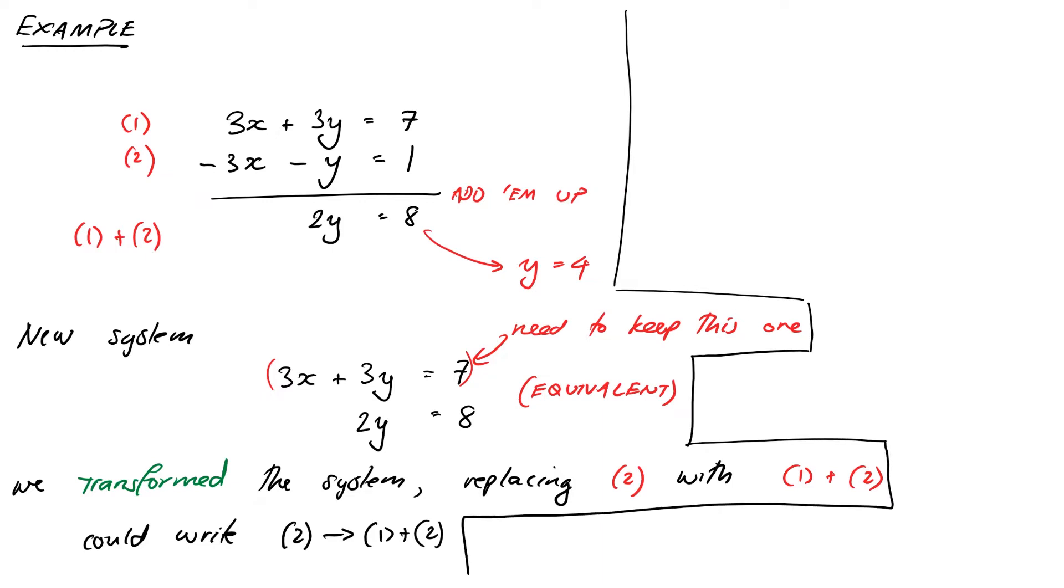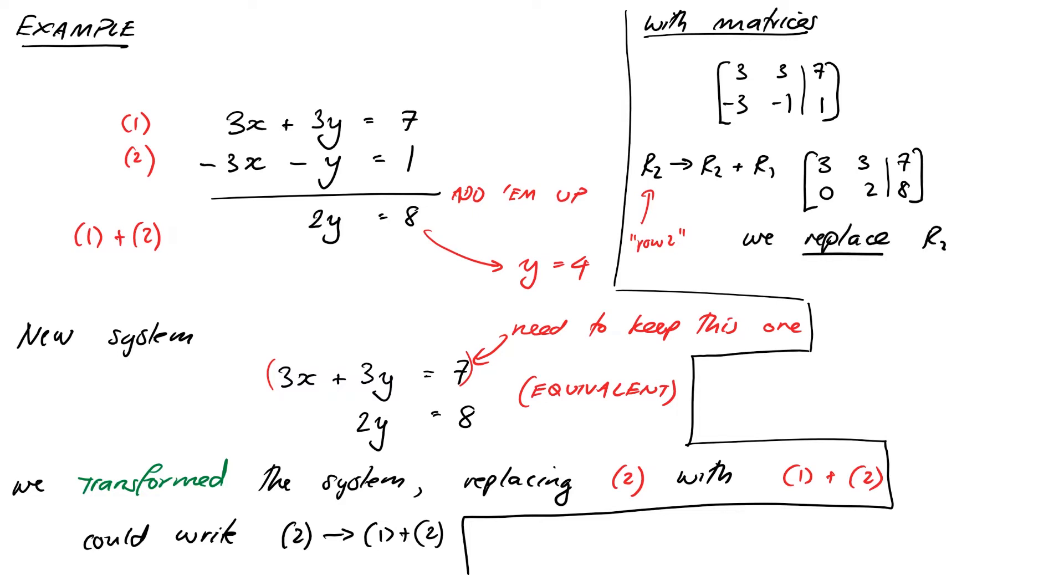Let's have a look at what this would look like with our augmented matrices. We could write our system down as the augmented matrix [3, 3, 7; -3, -1, 1]. The operation we did is we replaced row 2 with row 2 plus row 1. So we write that as R2 → R2 + R1, and then we just write down the new matrix which is [3, 3, 7; 0, 2, 8]. So we can think of what we just did as replacing row 2 with the sum of row 2 and row 1. If we work this way with our matrices, we don't need to keep writing our equations down. We can just do the arithmetic on the rows of the matrix.